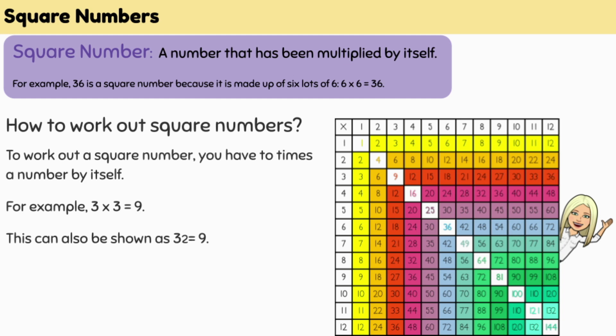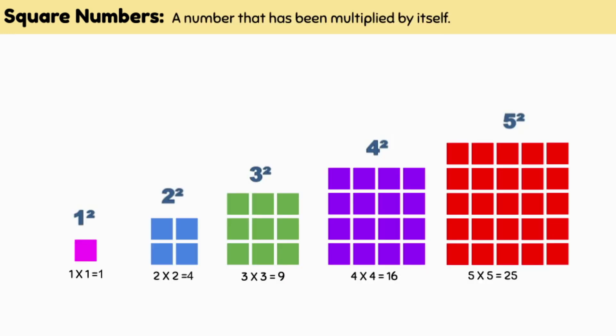You can work out what square numbers are by multiplying any number by itself. 2 times 2 gives a square number of 4. 3 times 3 gives a square number of 9. 4 times 4 gives a square number of 16. 5 times 5 gives a square number of 25.